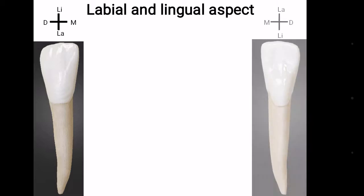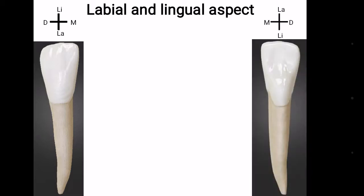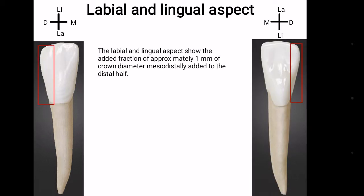Labial and lingual aspect: It is similar to the central incisor. Only an increase of 1 mm is seen in the crown mesiodistal diameter which is added in the distal half.